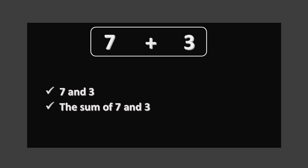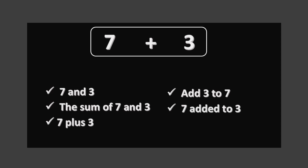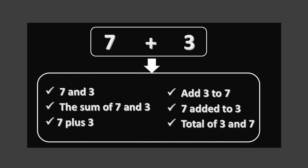There are lots of interesting things about adding. For example, look at this addition sum: seven plus three. You can describe it in different ways — you can say: seven and three, the sum of seven and three, seven plus three, add three to seven, seven added to three, or the total of three and seven. These are different ways to describe an addition sum.